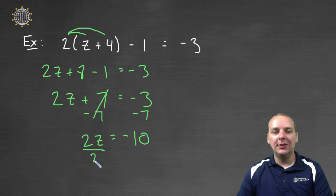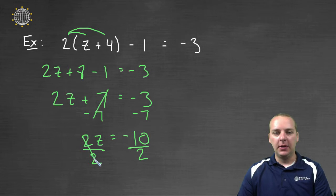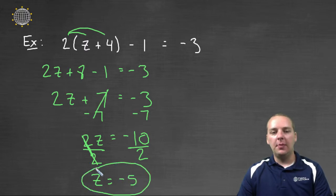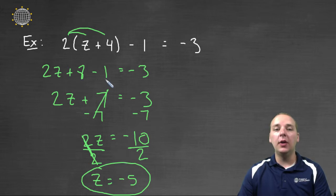And the last step, as always, is to divide by the variable's coefficient, which is 2 in this case. The twos will cancel and leave us with the final answer of z = -5. Now just for time's sake, I'm not going to take this one and plug it back in, but you can and verify that it really does make the left side match the right side.